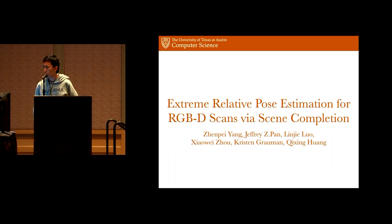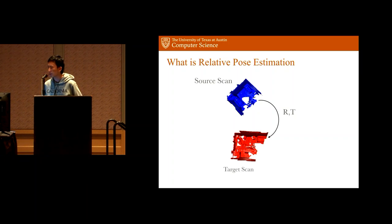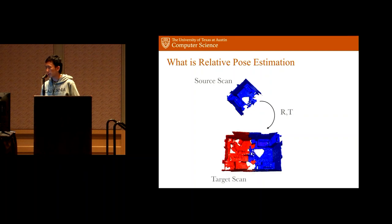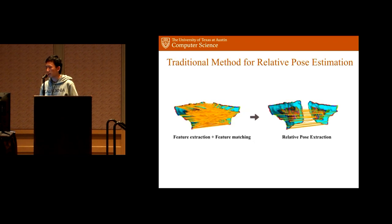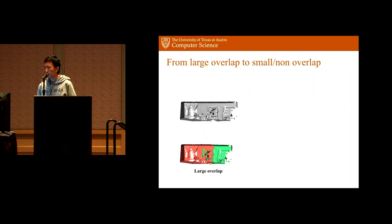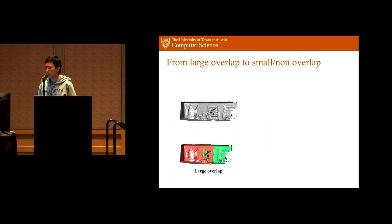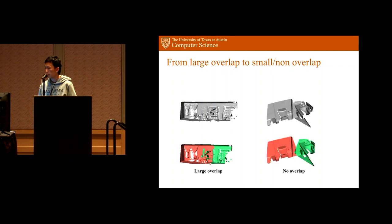I'm from UT Austin. I present our work on extreme relative pose estimation by scene completion. Relative pose estimation aims to estimate a rigid transform between two scans to align them. Most prior works extract feature points on both scans, match them, and compute the rigid transform, successfully deployed in commercial systems requiring high-frame-rate video with sufficient overlap. We additionally consider cases where the two scans have small or no overlap, where our algorithm performs much better.